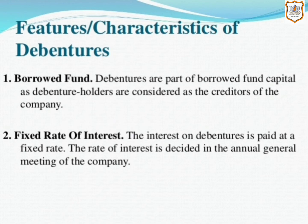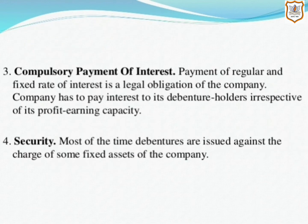The second feature is fixed rate of interest. A debenture is a security that bears a fixed rate of interest, payable on a predetermined date. The company has to pay interest on debentures even if it has earned a profit or not. Interest on debentures is payable at a fixed rate, and so debentures are known by that rate — for example, if interest is payable at 8% per annum, the debentures are referred to as 8% debentures.